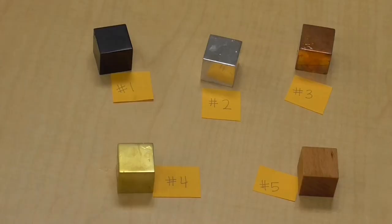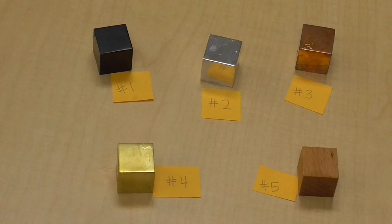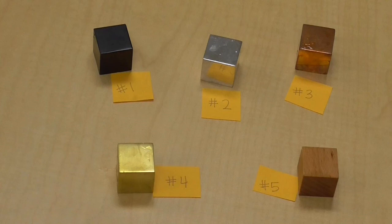These are the five objects that we're going to be measuring the mass and the volume. Number one, number two, number three, number four, number five. We don't know what these objects are just yet, but after we figure out all of our calculations with our density, you should have a better grasp with figuring out what those objects are.